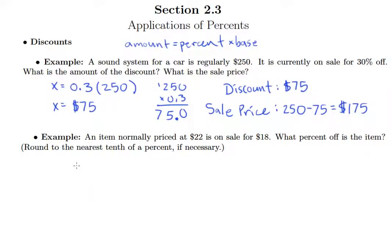So clearly we're looking for the percent. So we're going to have amount equals percent, which we don't know, times the base. So what should the base be? Well, base is the original price. And so we understand that should be $22 since the item is normally priced at $22.